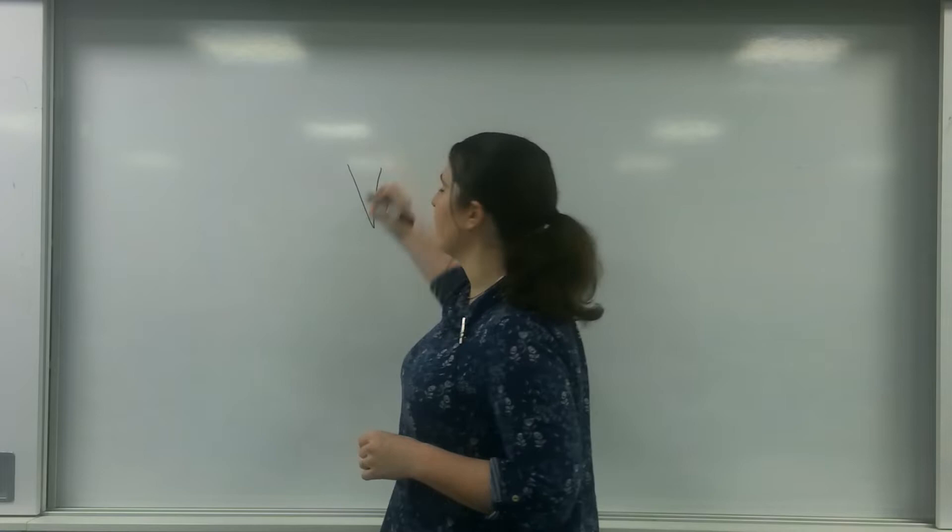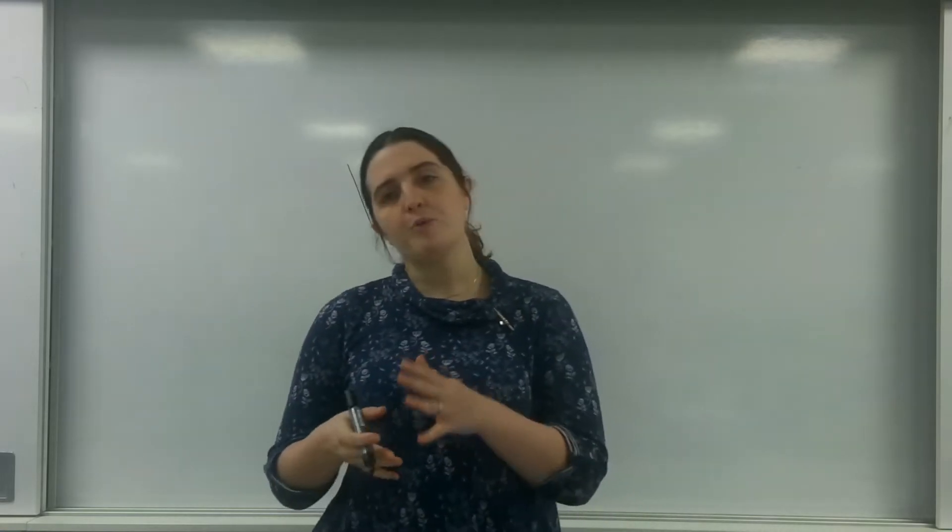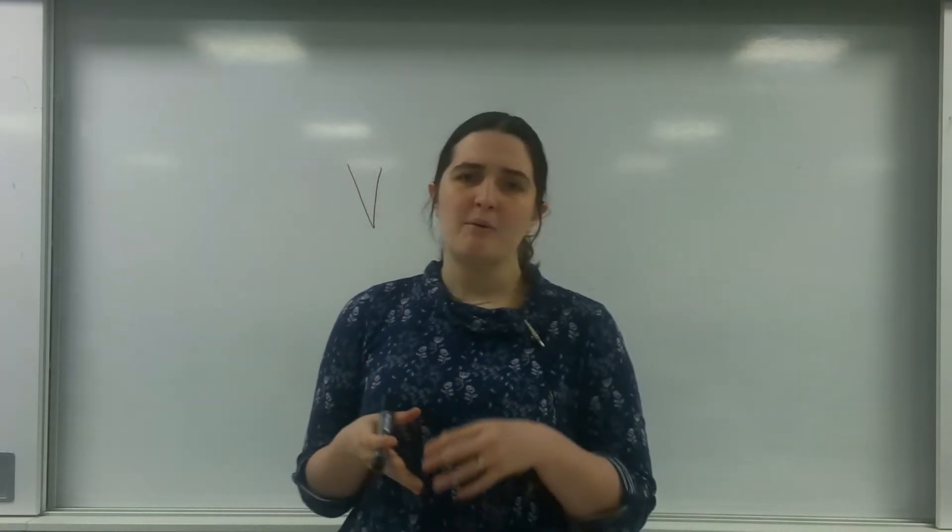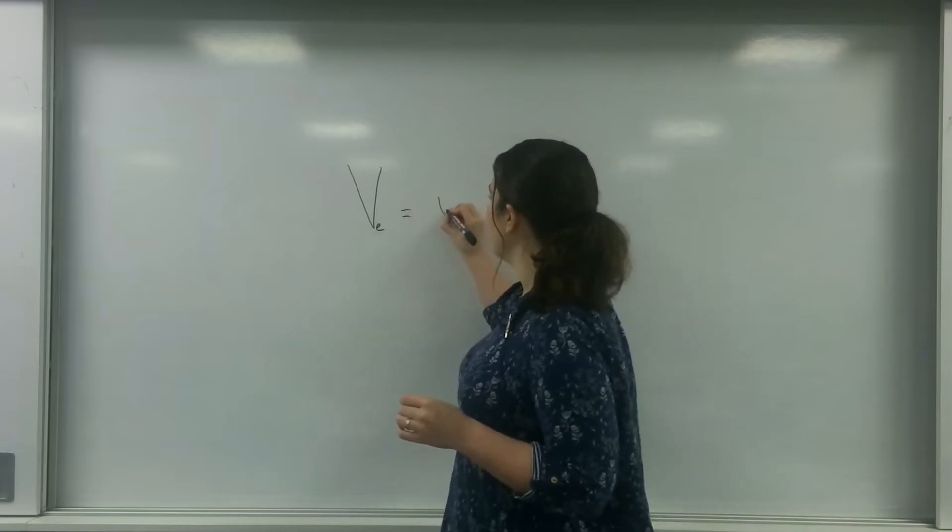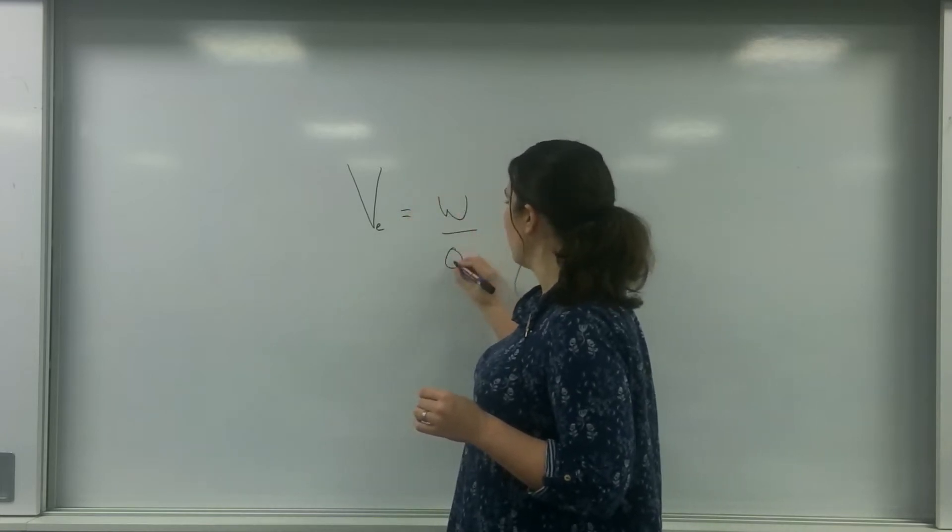So electric potential is represented by this letter V. And because we use V for electric potential and we use V for gravitational potential, I like to try to disseminate it by putting a little E right there so I know I'm talking about electric potential. And the definition for electric potential is the energy per unit charge.